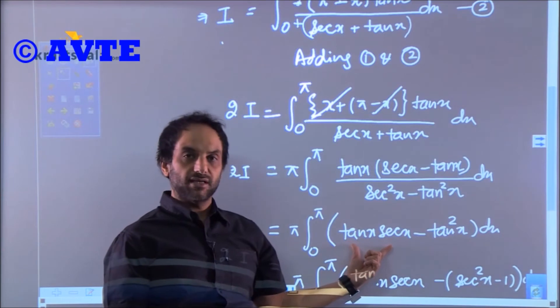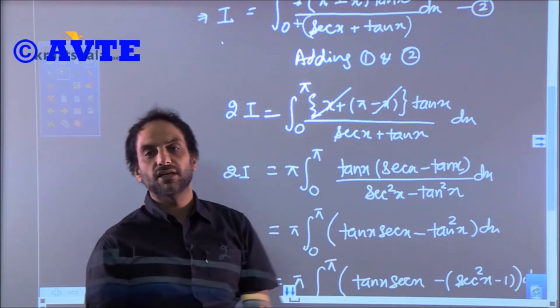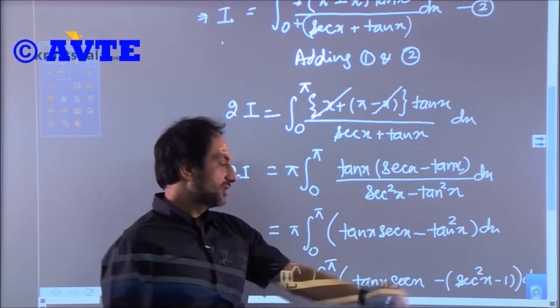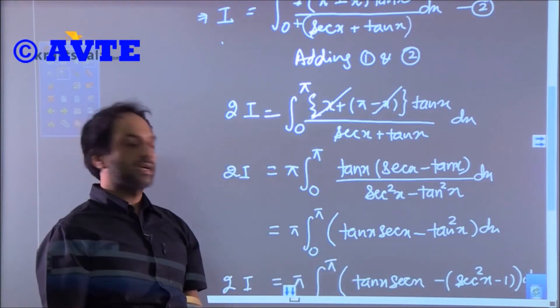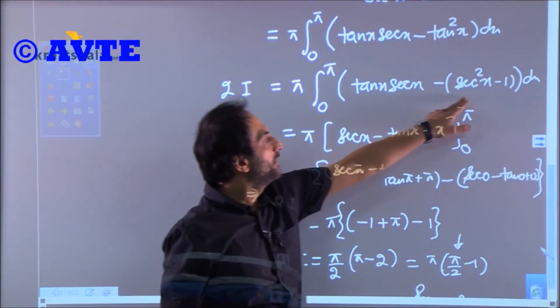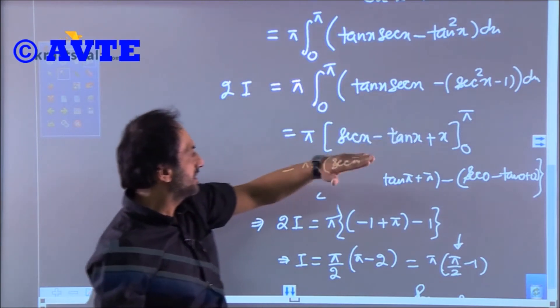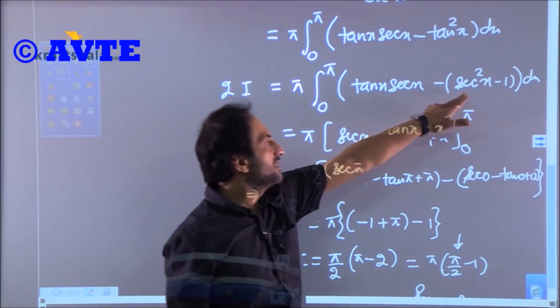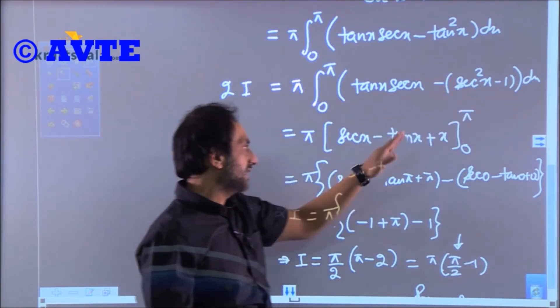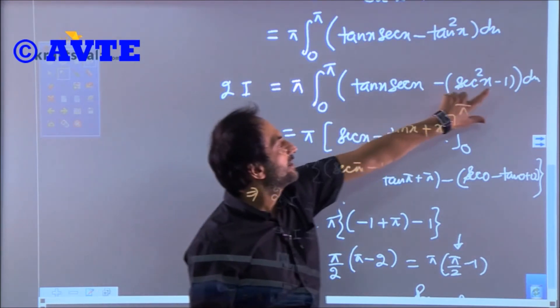Now we are multiplying tan x inside the bracket in the numerator. You have tan x sec x minus tan² x. What you do for the integration of tan² x—you always write that as sec² x - 1. Simply open it and do the integration. What is the integration of tan x sec x? That is sec x. What is integration of sec² x? That's tan x. We have minus outside, so it stays with minus.